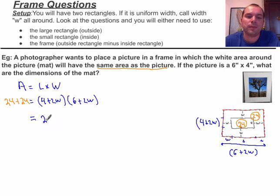So let's expand this. 4 times 6 is 24. That's 12w, 8w, it's 20w. And now 2 times 2 is 4w squared.